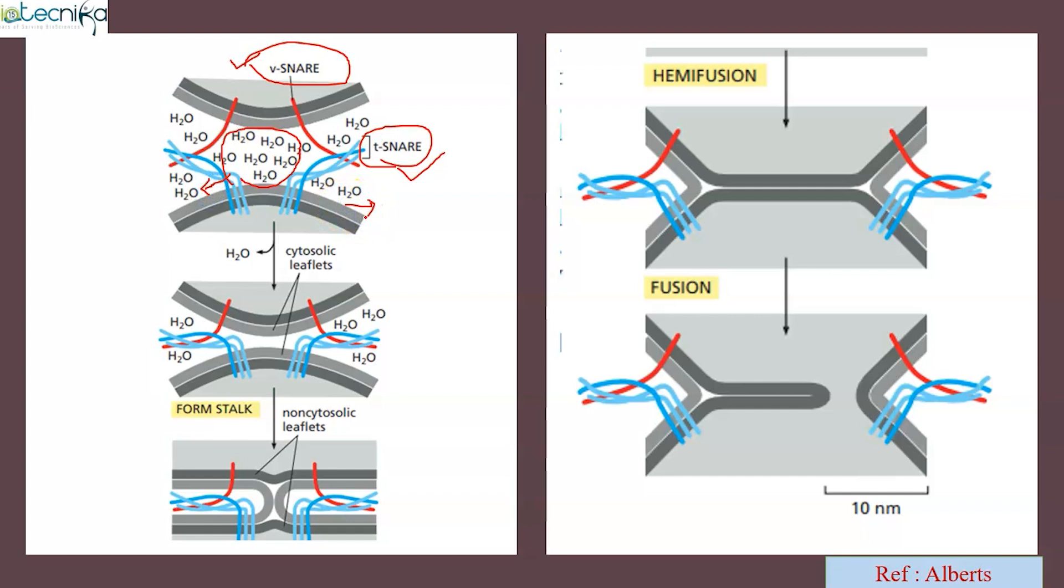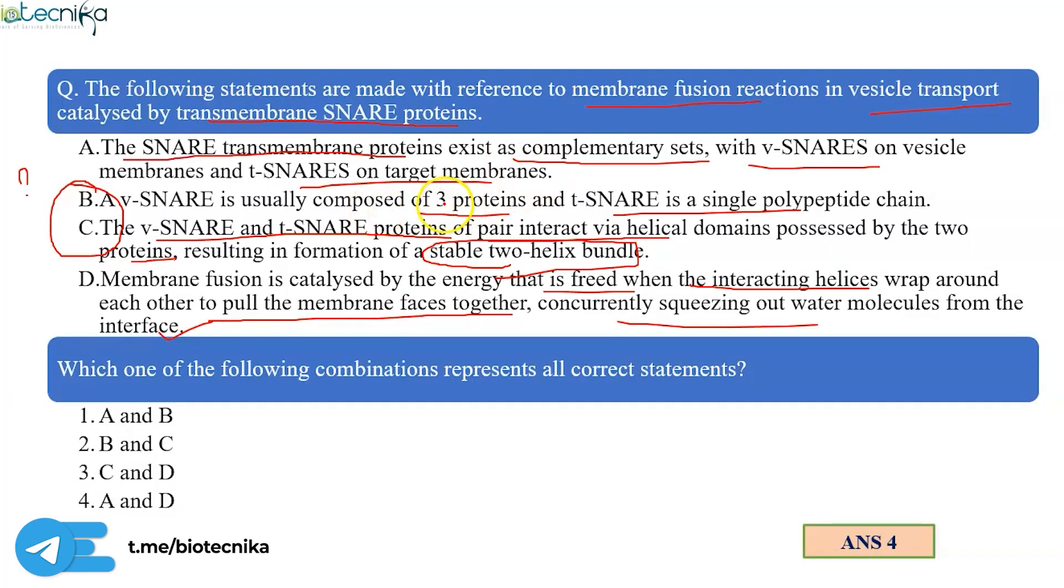With this, the fourth statement is correct. Once the water molecules are moving outside, we have initially the cytosolic leaflets coming together, then the non-cytosolic leaflets coming together, resulting in hemifusion and finally complete fusion. You might have noted here v-SNARE is made up of a single polypeptide chain while t-SNARE is made up of three polypeptide chains, and that's the reason we have eliminated option B.